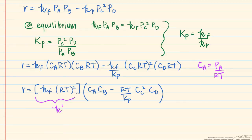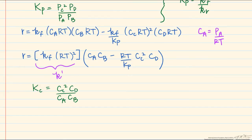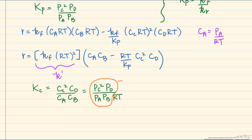We get a similar form with concentrations of reactants and products raised to their stoichiometric coefficients, plus an RT over Kp term. It makes sense to replace Kp with Kc since we are now working on a concentration basis. The concentration-based equilibrium constant Kc is defined as that ratio, and when we substitute partial pressures as concentration times RT, most of the RT terms cancel, leaving Kc equal to Kp divided by RT.